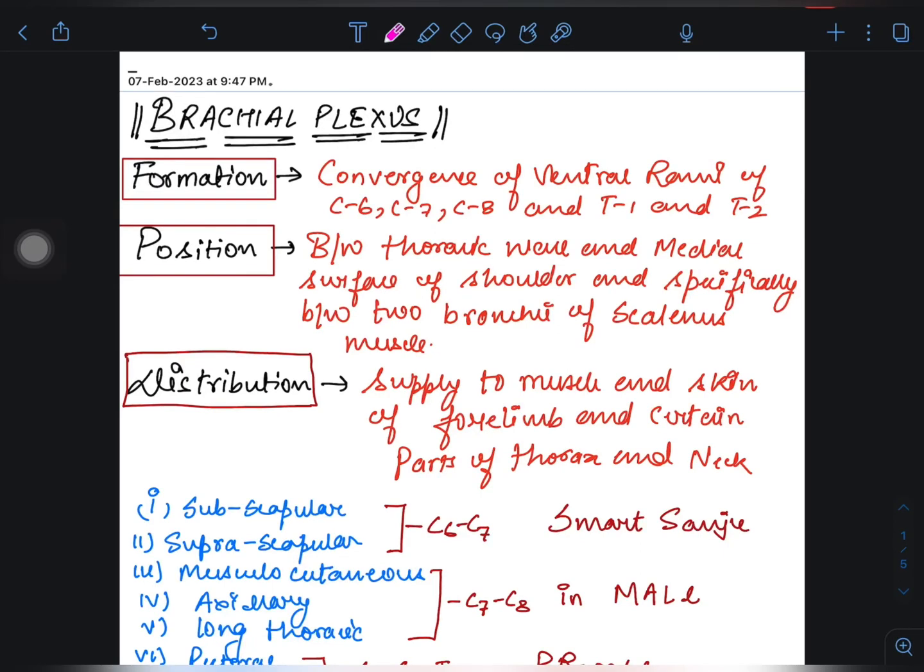Hello everyone, so today we will be studying about a very important topic called brachial plexus, and it's very important from exam point of view. So let's begin. First of all comes the formation. It is the convergence of ventral rami of C6, C7, C8, T1, and T2 nerves. Now what is ventral and what is rami? Rami means bunch or branch.